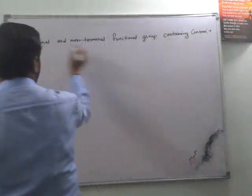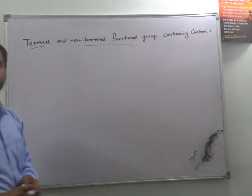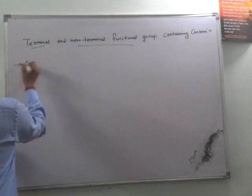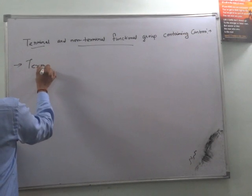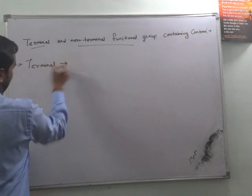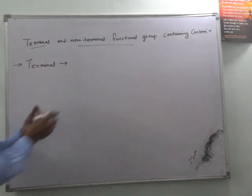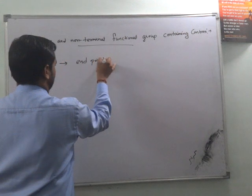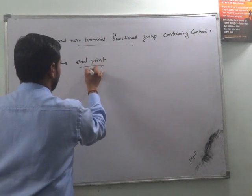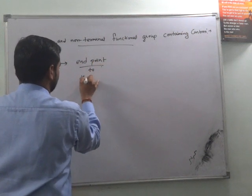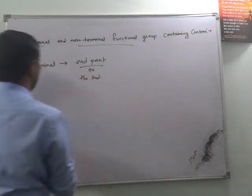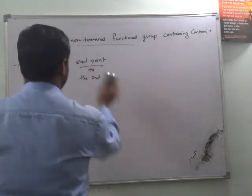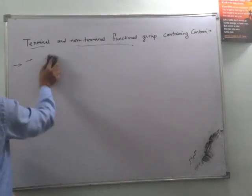Now I am discussing about terminal and non-terminal functional groups which contain carbon. What the name suggests? Terminal means there is an endpoint or it will be situated to the end of something. And non-terminal is the opposite which won't have any endpoint and it will be in the middle of the order.